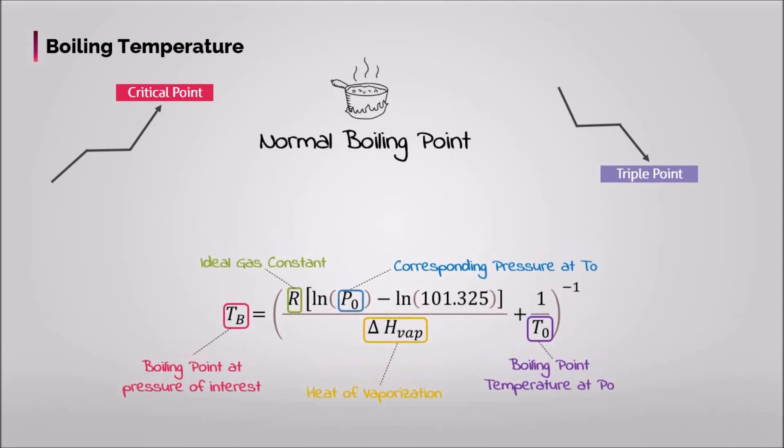There are two conventions related to the standard boiling point of water. The normal boiling point is 99.97 degrees Celsius or 211.9 degrees Fahrenheit at a pressure of 1 atmosphere or 101.325 kilopascal.